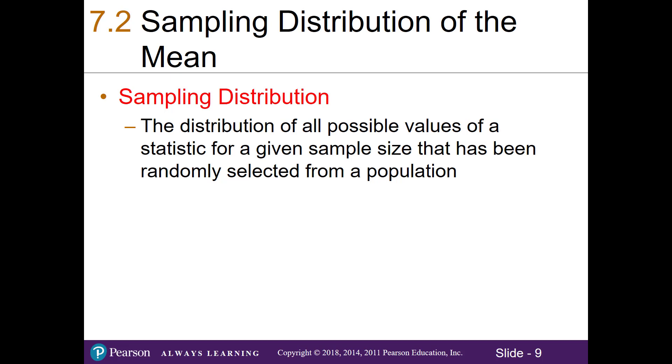Similarly, when we're working with the sampling distribution, this is where we're going to take the distribution of all possible values of a statistic, say the sample mean, for a given sample size that has been randomly selected from the population.